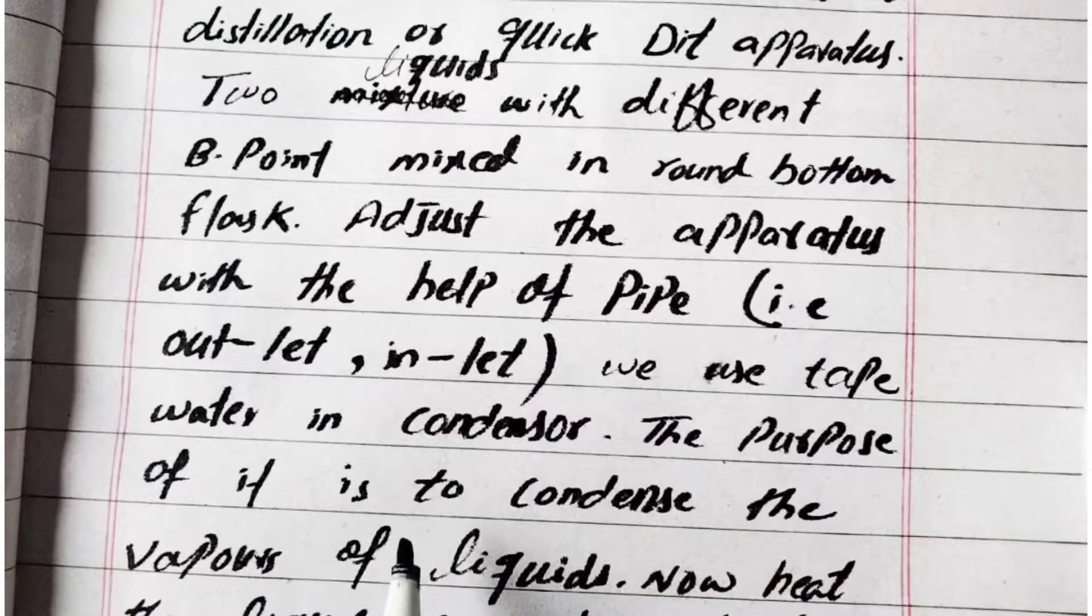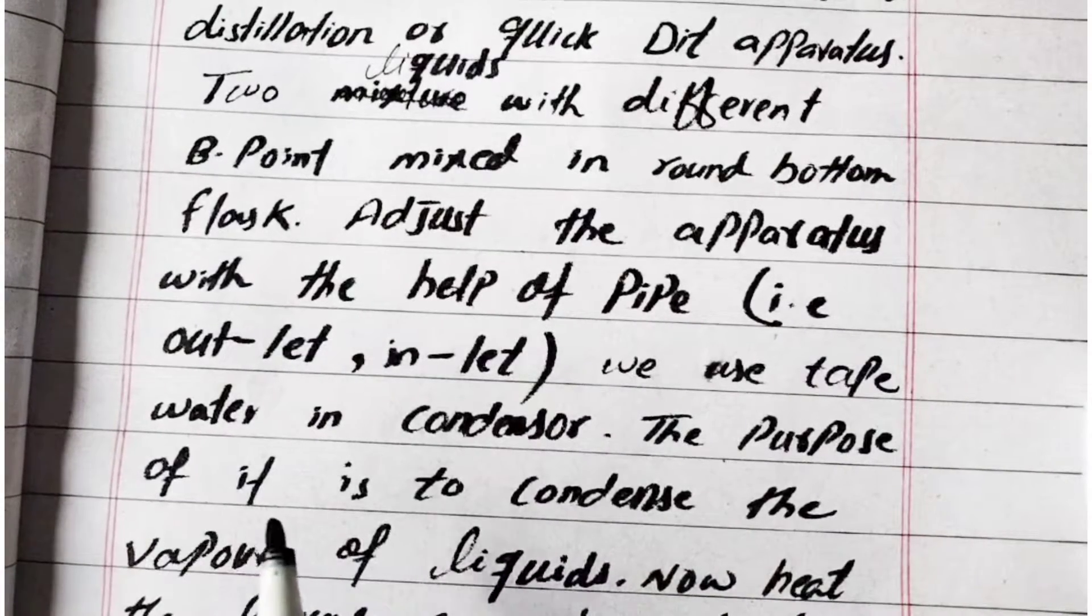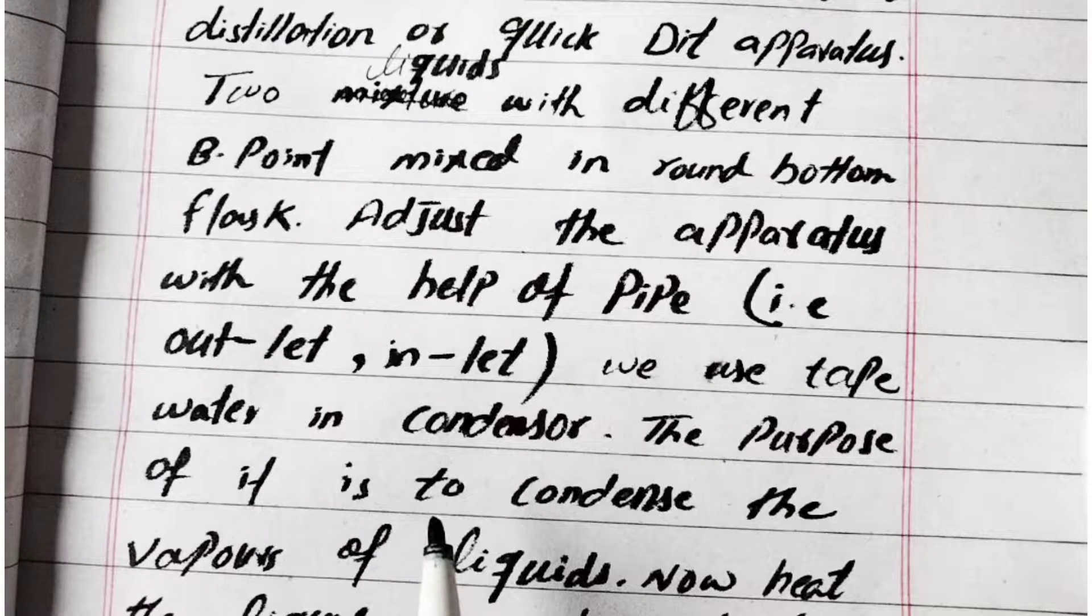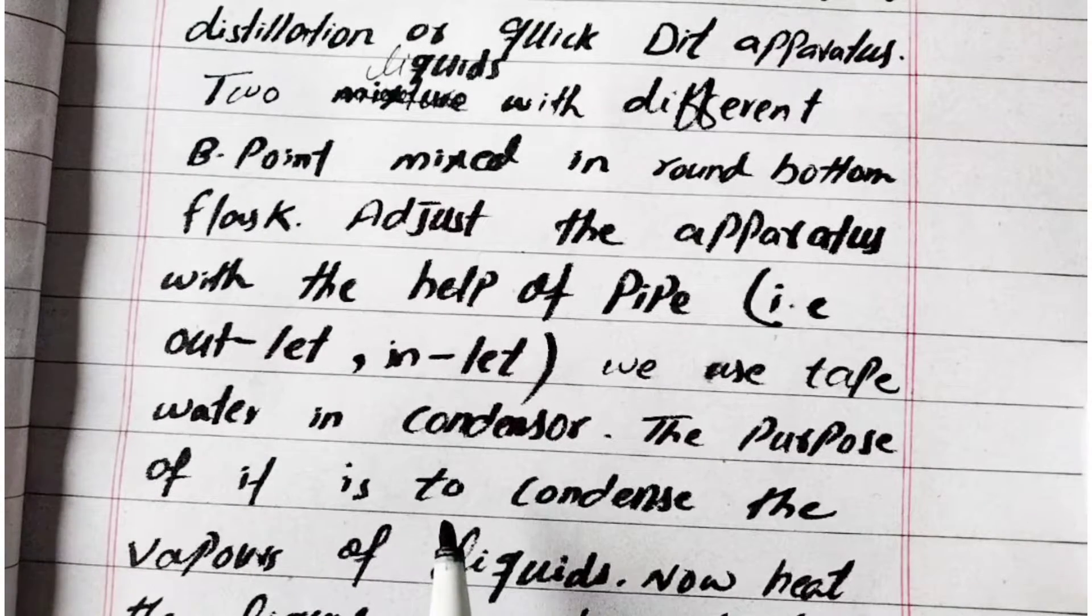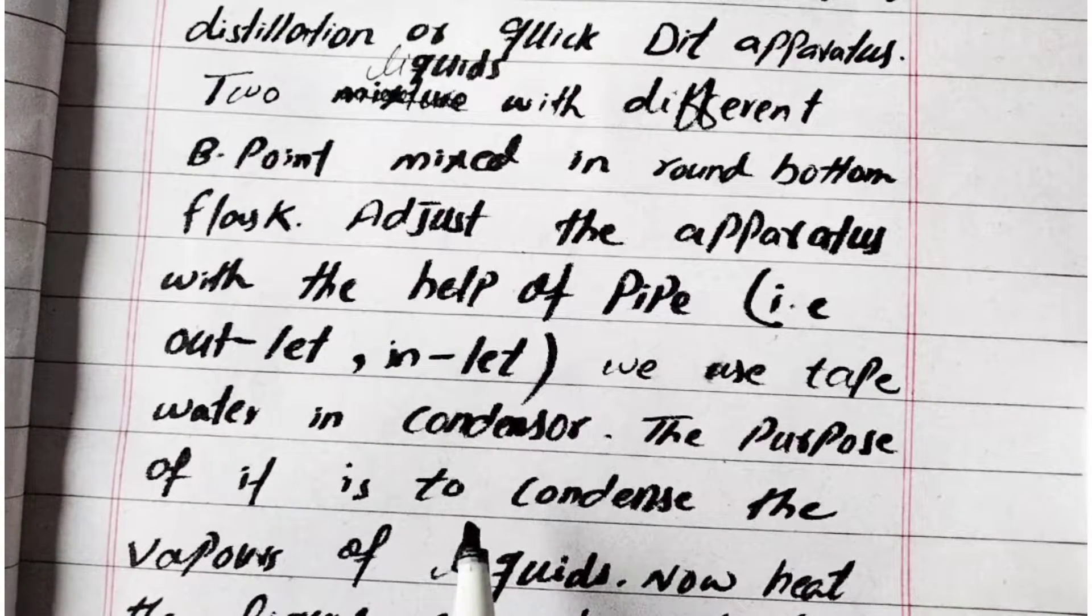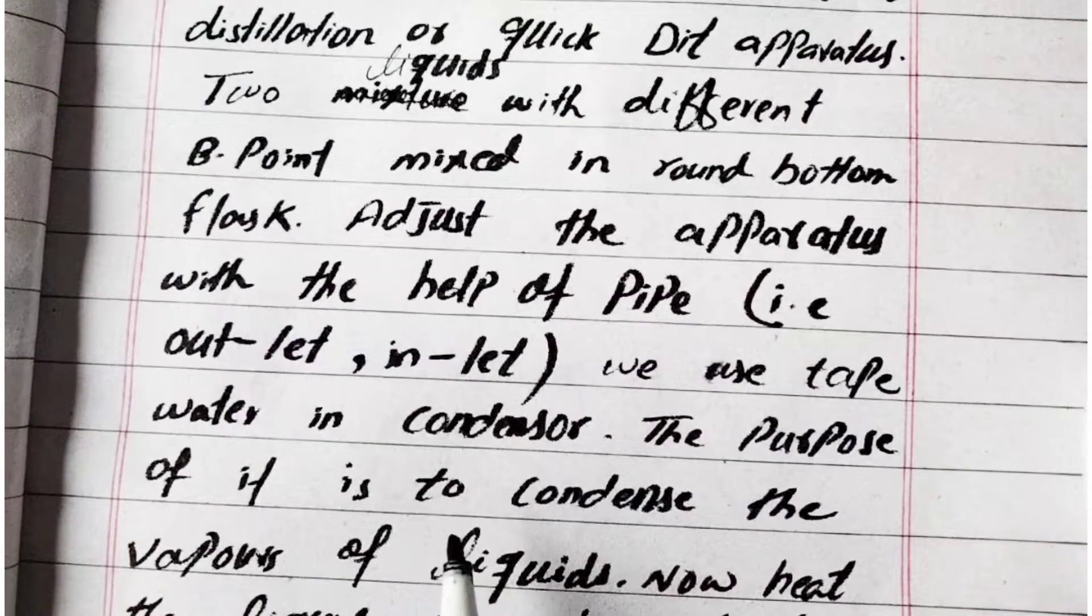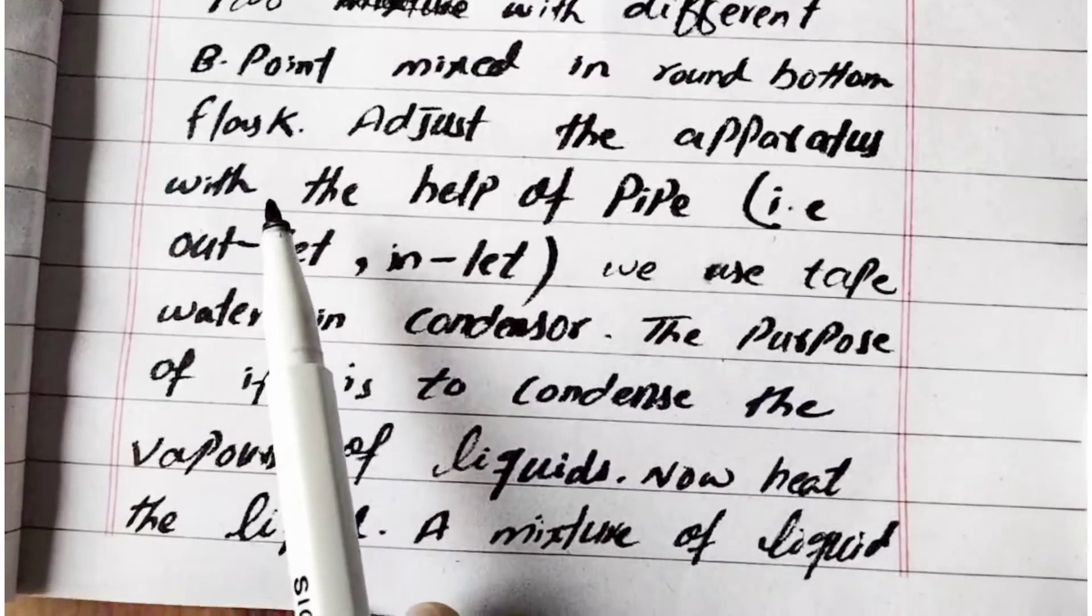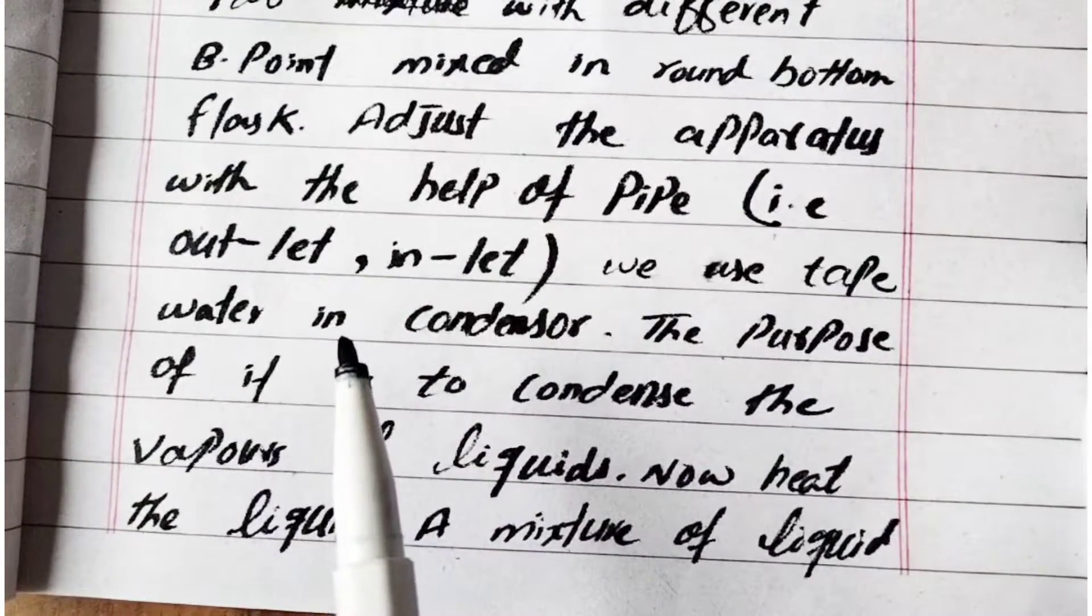The purpose of the condenser is to condense vapors of the liquid. When we heat it, it will convert to vapor, and the condenser converts these vapors back into liquid, which is collected in the receiving flask.